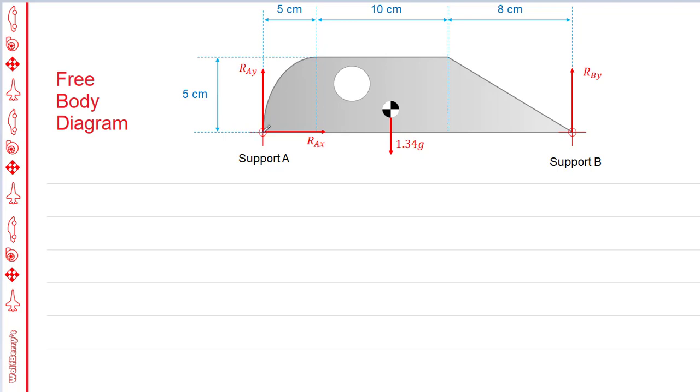It doesn't matter which way you draw these. If you drew them the wrong way, you'll find out in the end because your reaction force will be equal to minus something. It'll be a negative value. A lot of times you can't tell which way it's going, so my rule is pick right and up always.